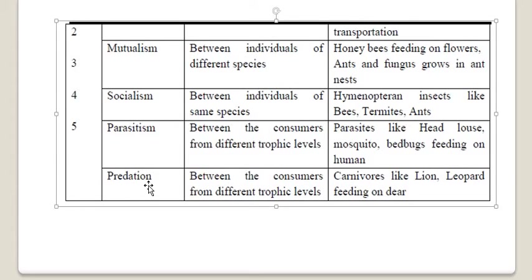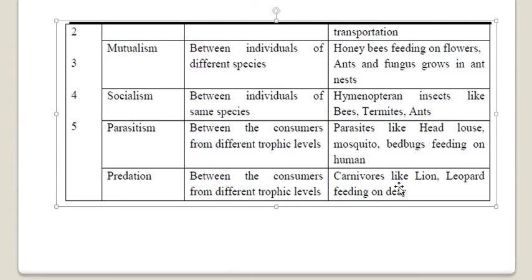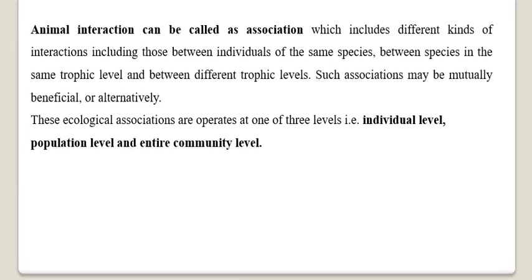Predation involves one prey and one predator, observed between different species or between consumers from different trophic levels. Carnivores like lion and leopard feed on deer — lion and leopard are top carnivores and predators, while the deer is the one preyed upon. This predator-prey interaction is called predation.